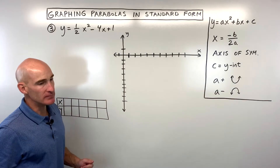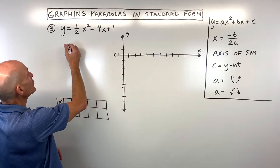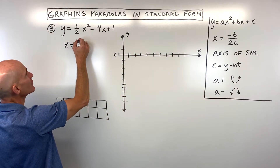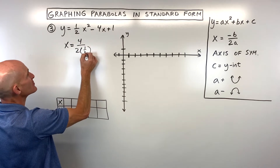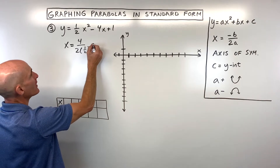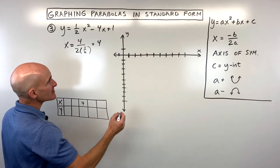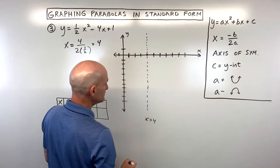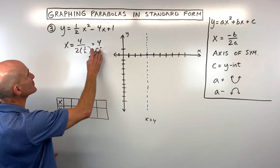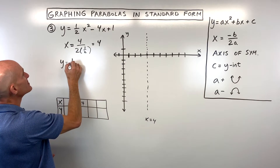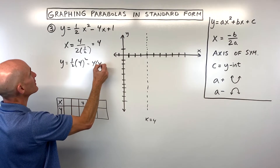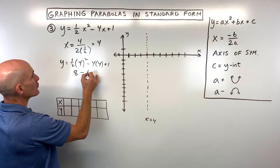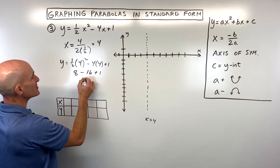For example 3, finding the axis of symmetry using negative b over 2a: the opposite of negative 4 is 4, divided by 2 times one half, which equals 1. So 4 divided by 1 equals 4 — that's the x-coordinate of our vertex and the axis of symmetry. Drawing a dashed line at x equals 4. To find the y-coordinate of the vertex, we plug 4 back in: one half times 4 squared minus 4 times 4 plus 1. Following order of operations: 4 squared is 16, times one half is 8. 4 times 4 is 16. So 8 minus 16 plus 1 gives negative 7.